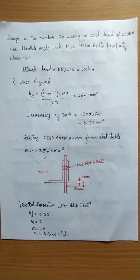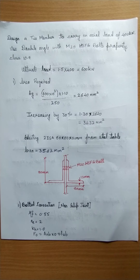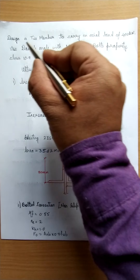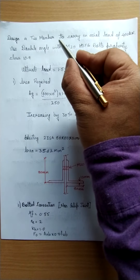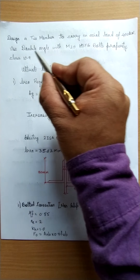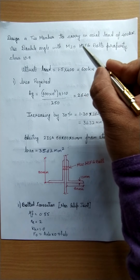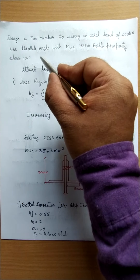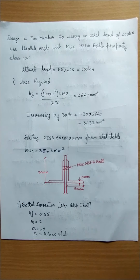Welcome students to today's lecture on design of tension members. We will solve a numerical where design is done using a double angle section. The question is: design a member to carry an axial load of 400 kilonewton using a double angle with M20 HSFG bolts of property class 10.9.